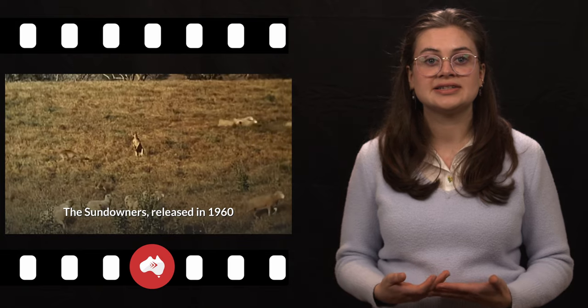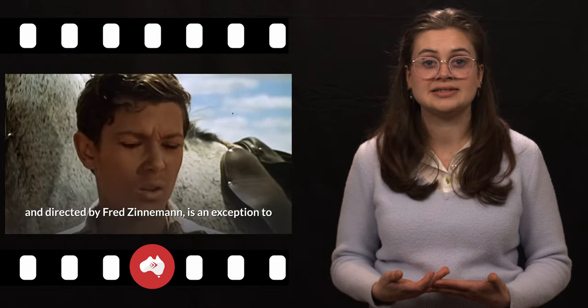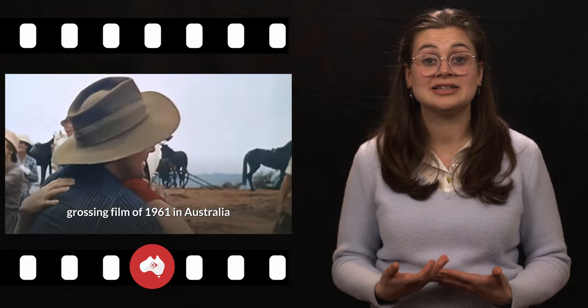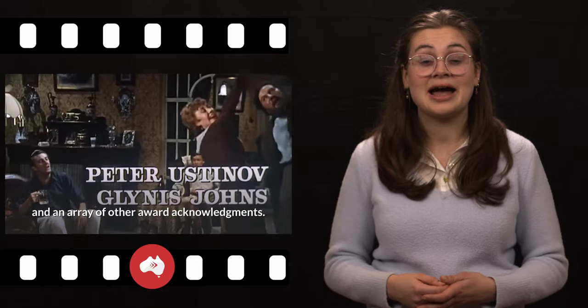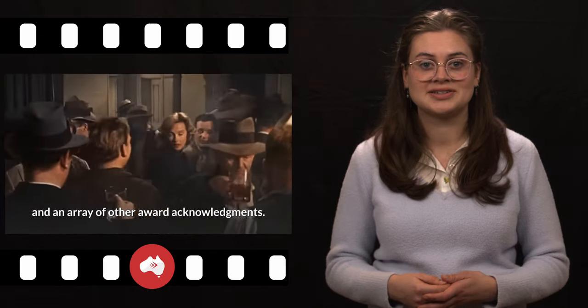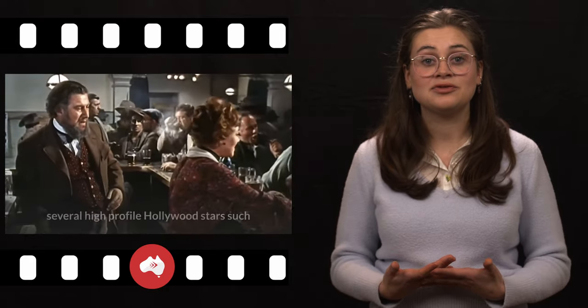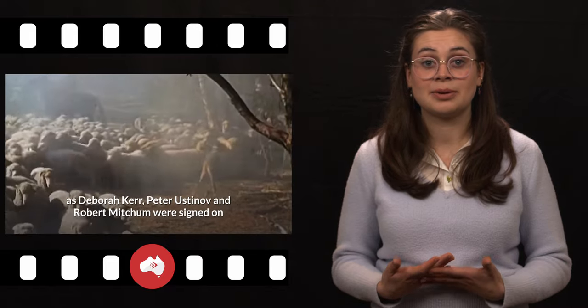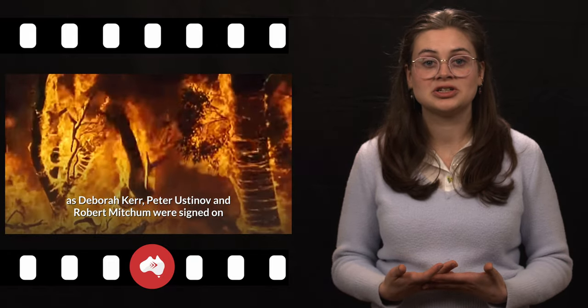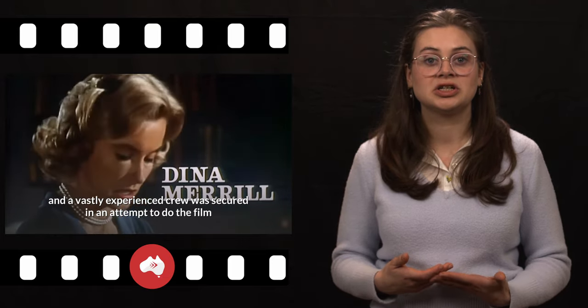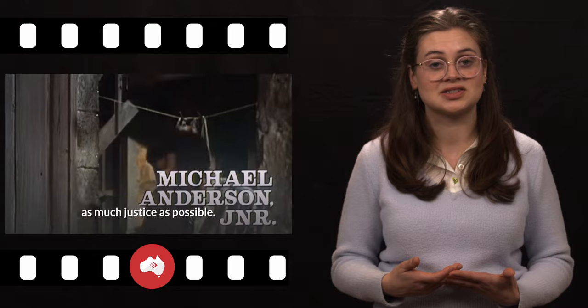The Sundowners, released in 1960 and directed by Fred Zinnemann, is an exception to that, after becoming the third highest grossing film of 1961 in Australia and receiving five Oscar nominations and an array of other award acknowledgments. Considered to be one of the first Australian westerns shot in Technicolor, several high-profile Hollywood stars such as Deborah Kerr, Peter Ustinov, and Robert Mitchum were signed on, no doubt adding to the film's broader appeal, and a vastly experienced crew was secured in an attempt to do the film as much justice as possible.